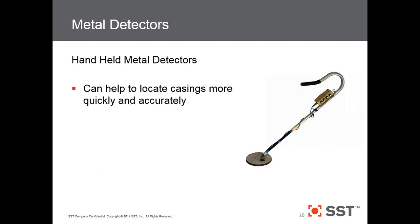Metal detectors. One of our agencies is currently exploring handheld metal detectors — not for every single car in the agency, but for selected cars such as supervisor cars or evidence tech cars — to go out and scan the area specifically for shell casings. We all know how small shell casings can be, and if you're in deep brush or difficult terrain where they're not easily seen, a metal detector can help you collect a lot more casings.